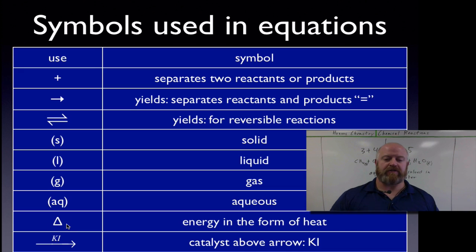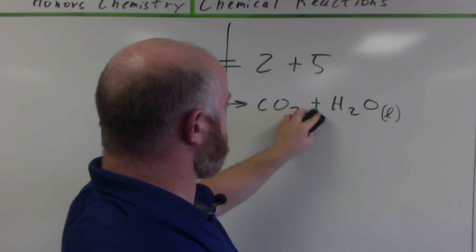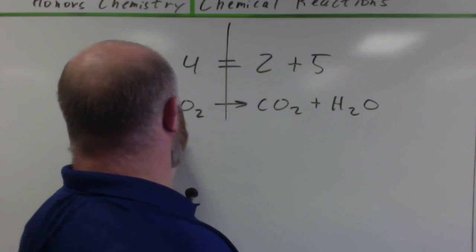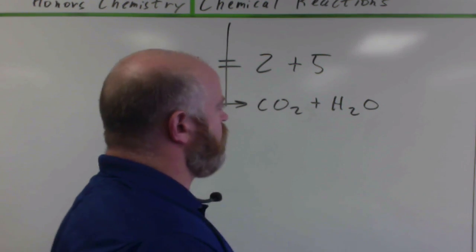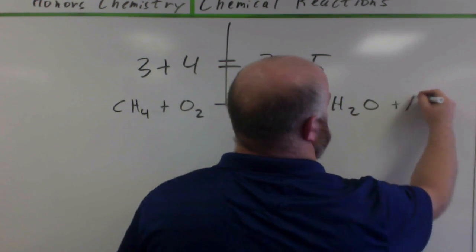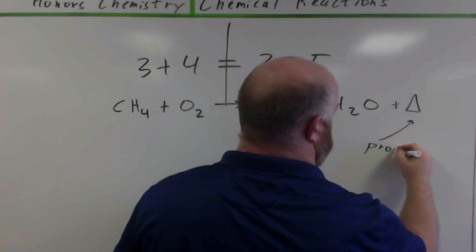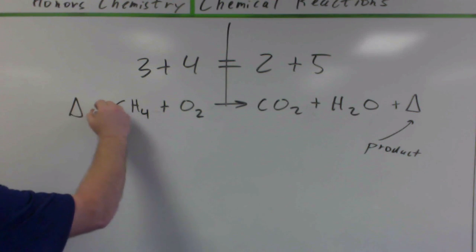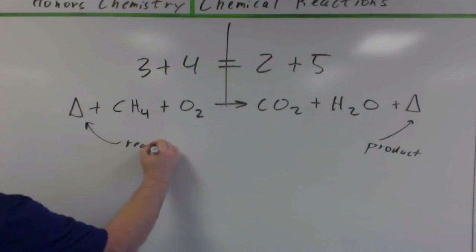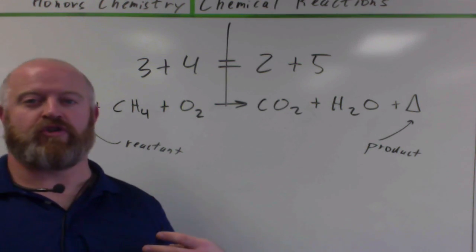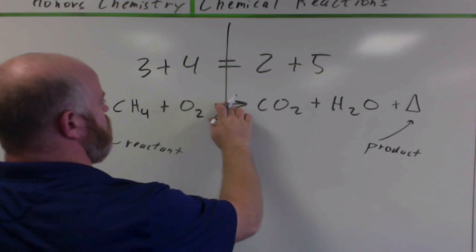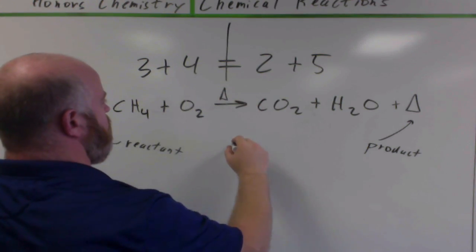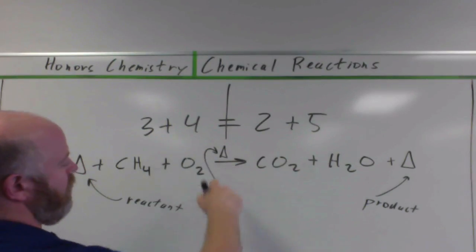We also use a Greek letter delta. It looks like a triangle. It's a way to symbolize heat or heat energy. This can be found on several places on a chemical reaction. You can find the delta symbol written as a product, meaning that you're producing heat. You can find it written as a reactant, meaning it takes energy in or absorbs heat energy. And you can actually find it written above the arrow. And when you put it above the arrow, it stands for a catalyst.